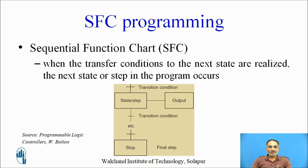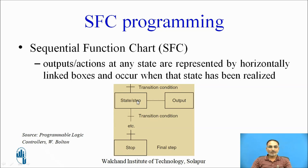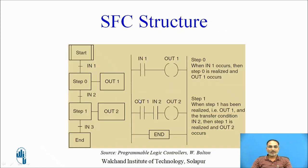When the condition to the next state is realized, the next state or step in the program occurs. Outputs or actions at any state are represented by horizontally linked boxes and occur when the state has been realized.